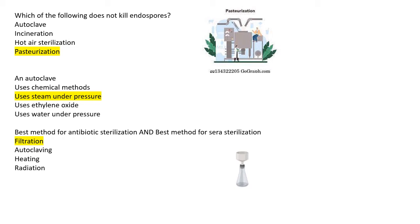Next: an autoclave uses which of the following method? The autoclave uses steam under pressure. The other options — chemical method, ethylene oxide, and water under pressure — are incorrect. The correct option is steam under pressure.